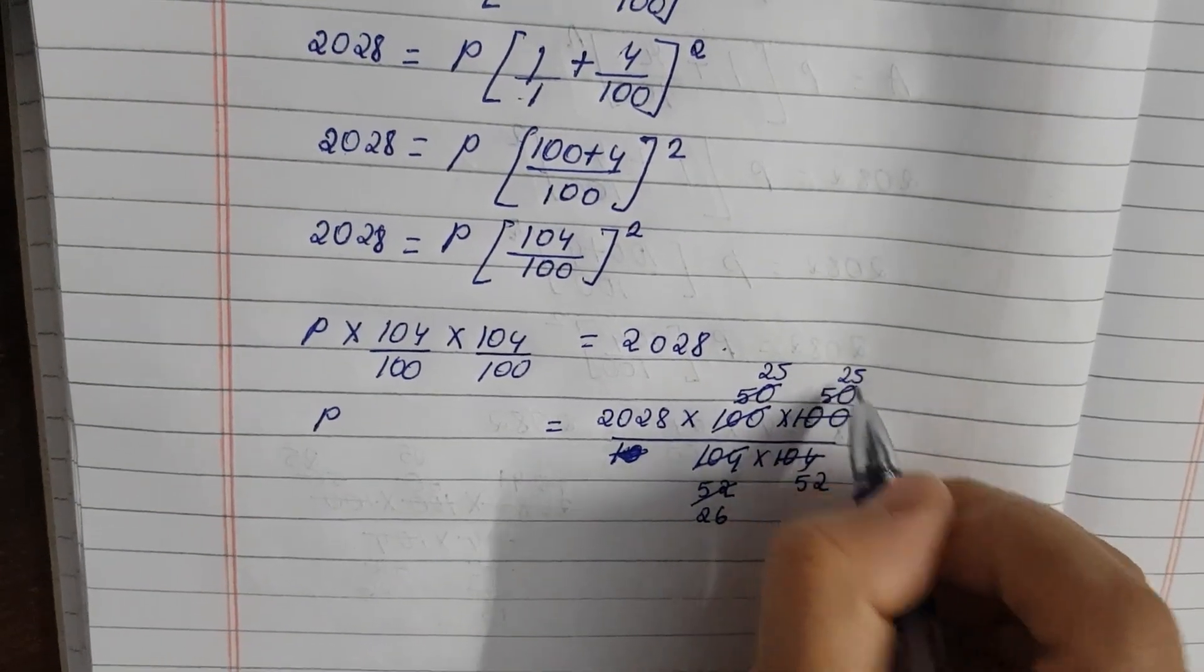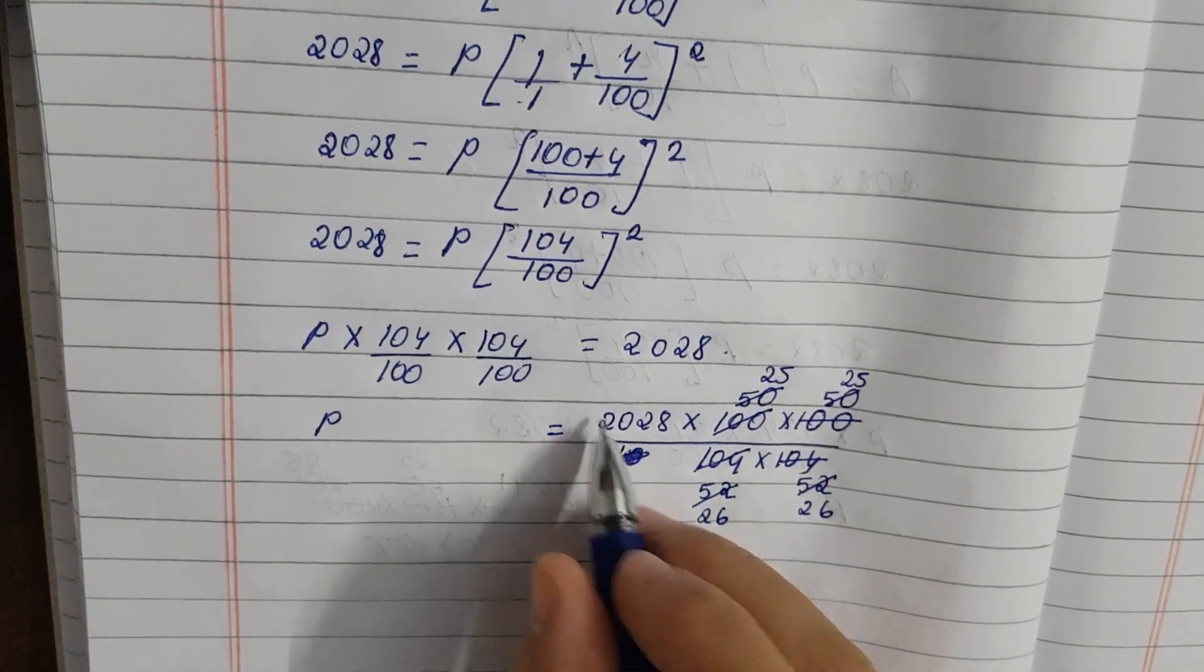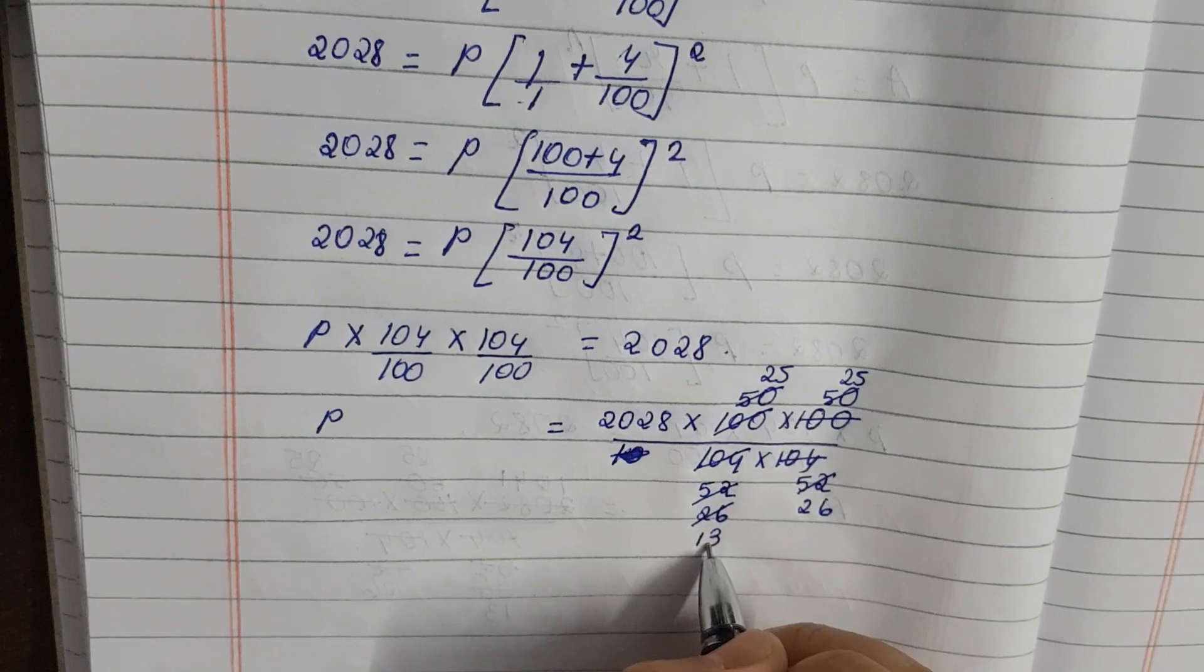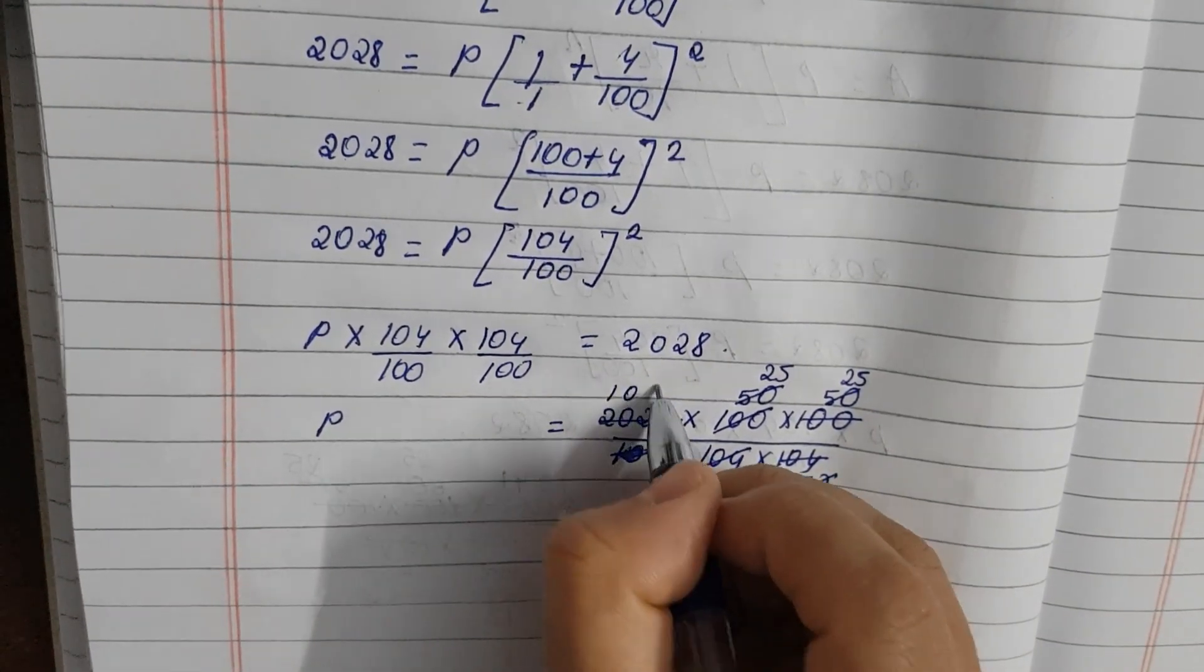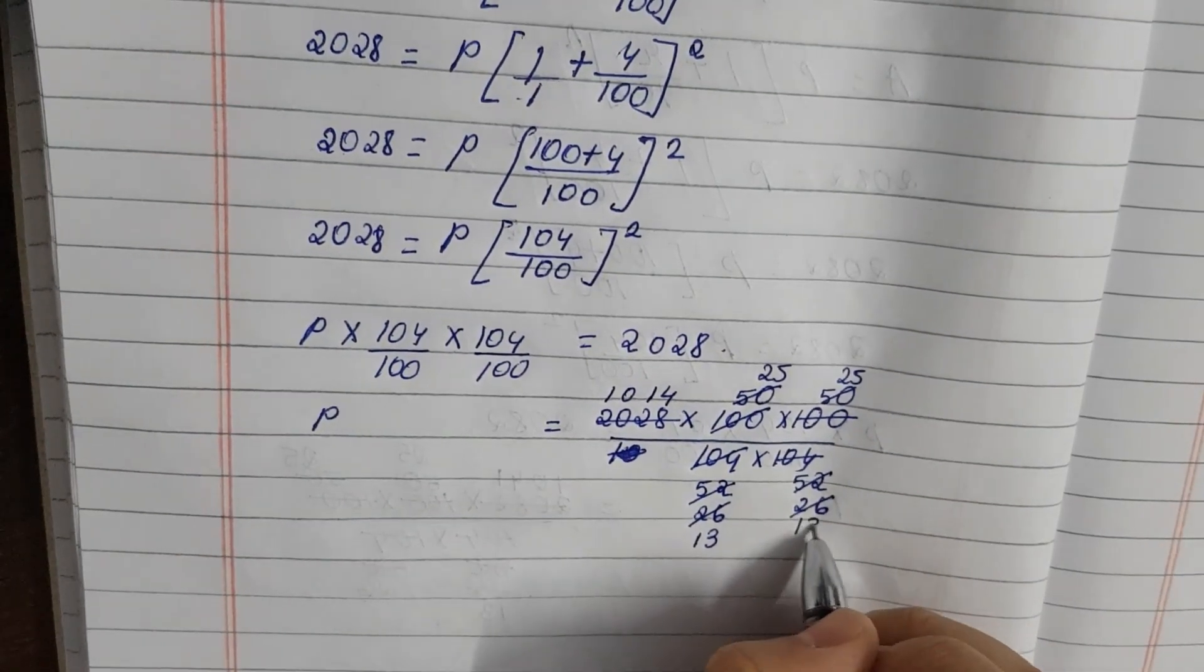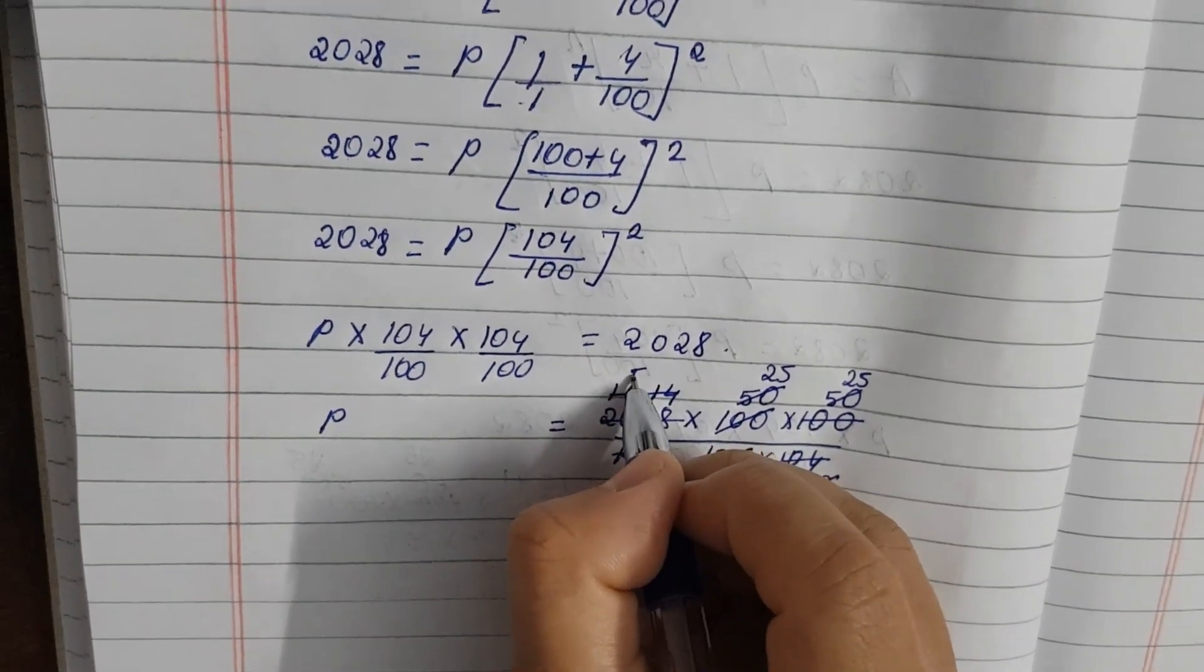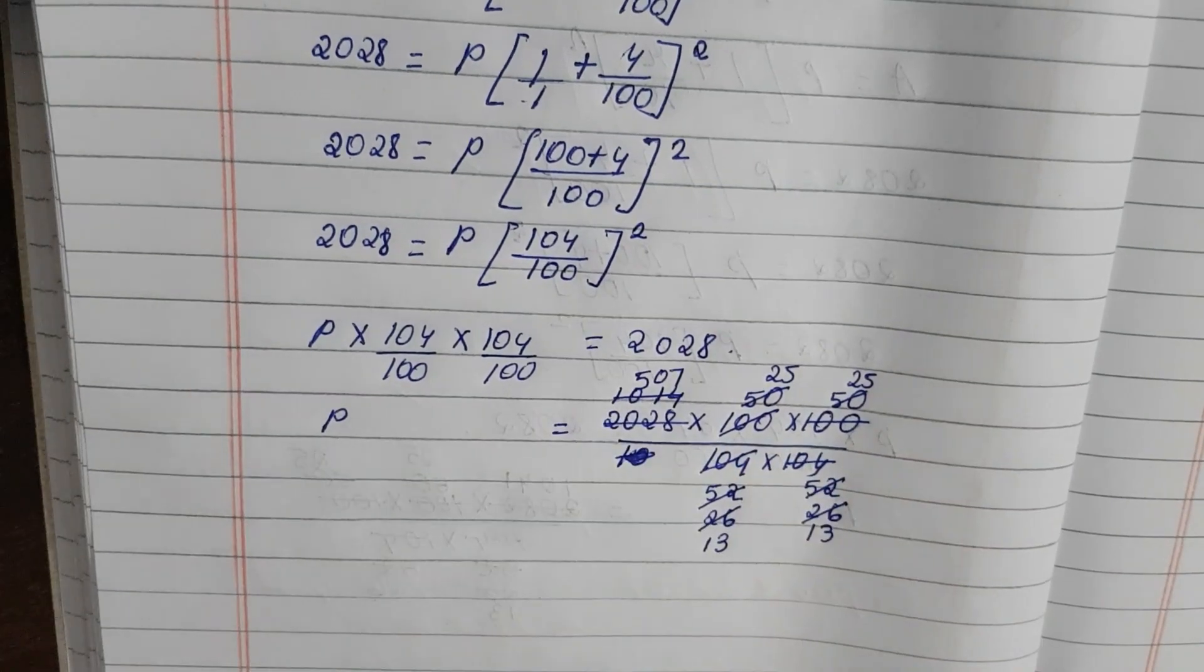Now we cancel it. So 26 is 2 times, 13 times. 2028 will go 1014 times. So again 26 will go 13 times and 1014 will go 507 times.